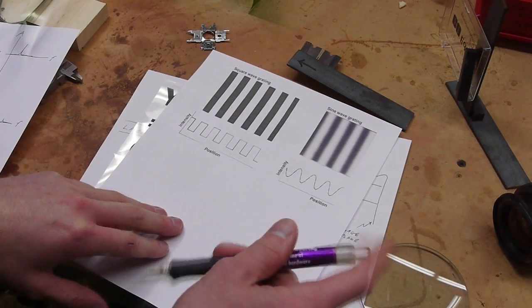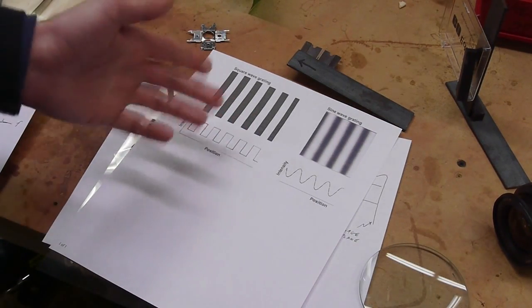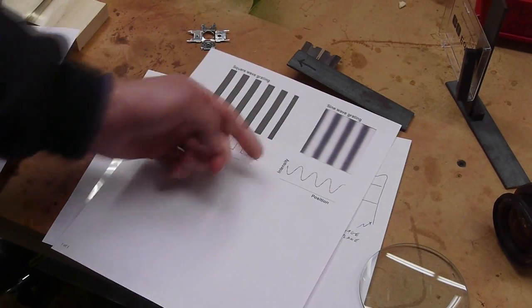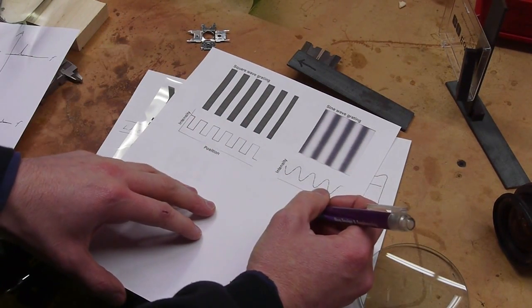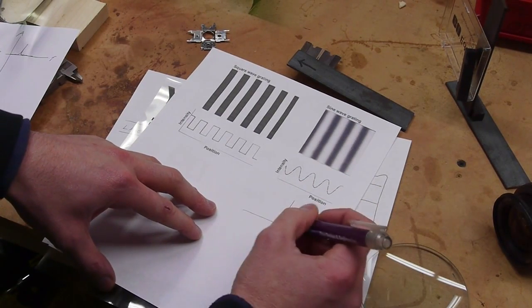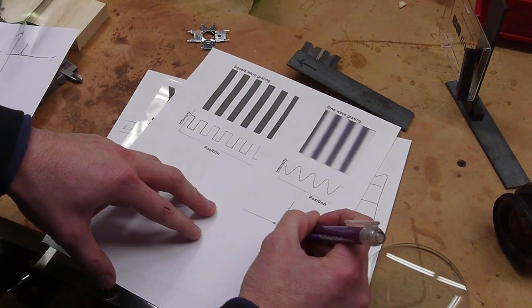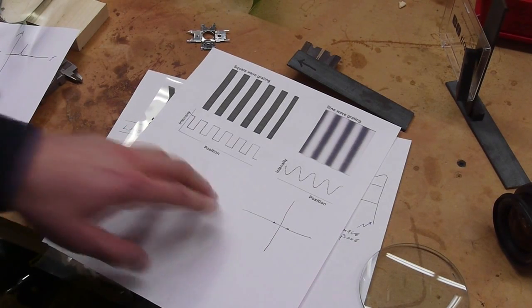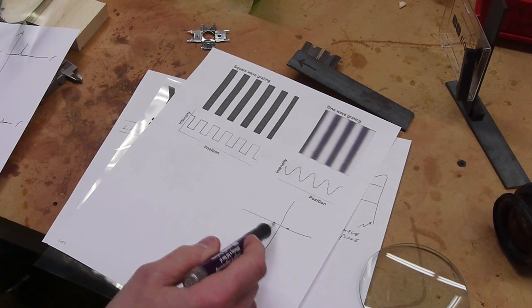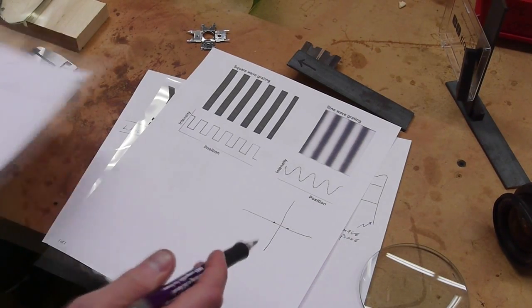It's possible to use the same mathematics to apply a Fourier transform to this. If we do that, what you end up with is an output image with a dot here and a dot here.